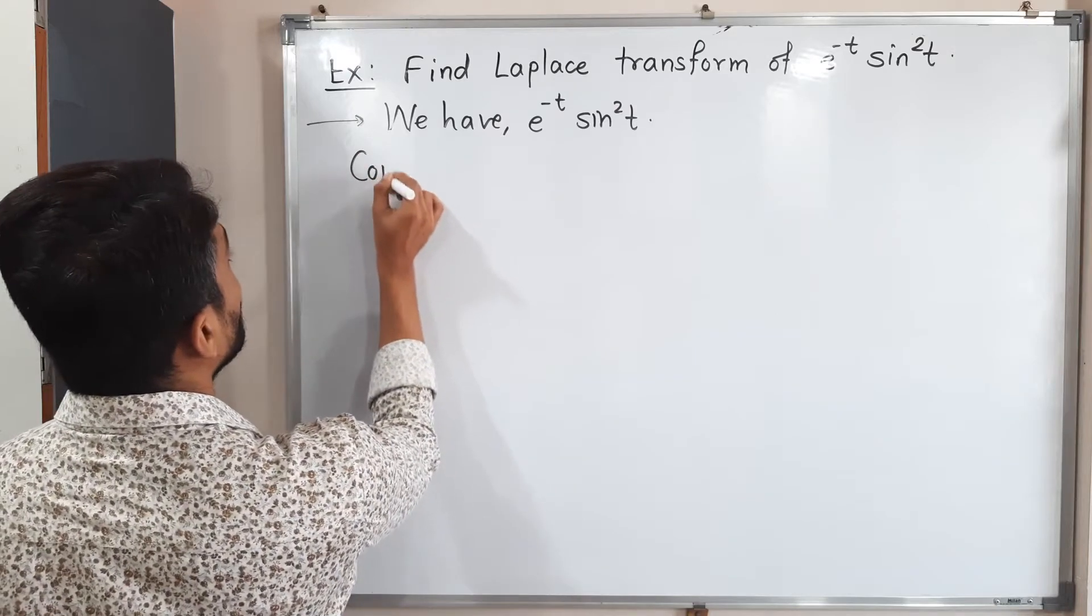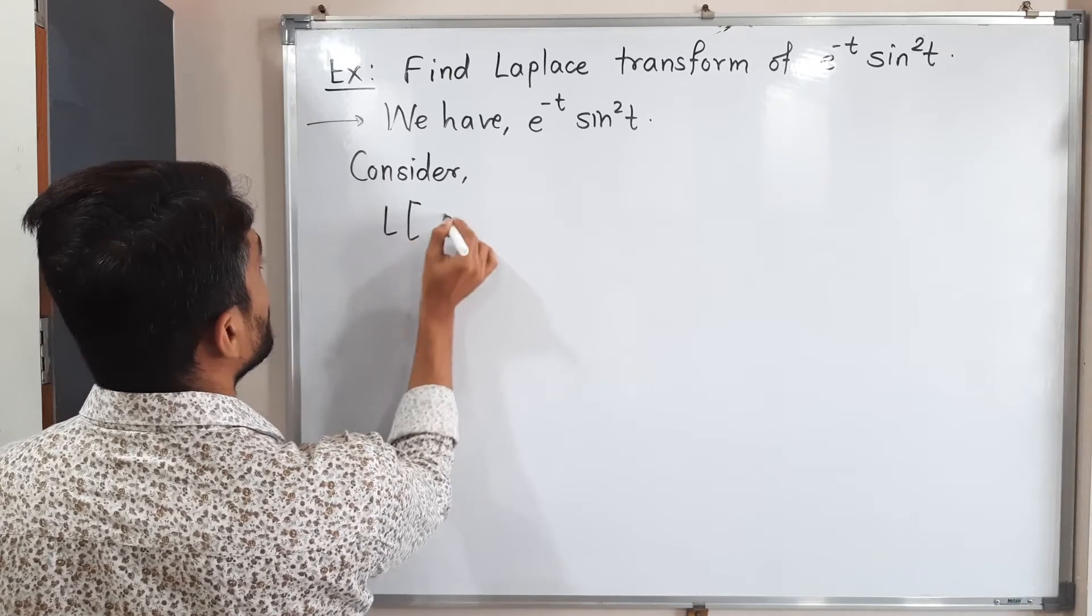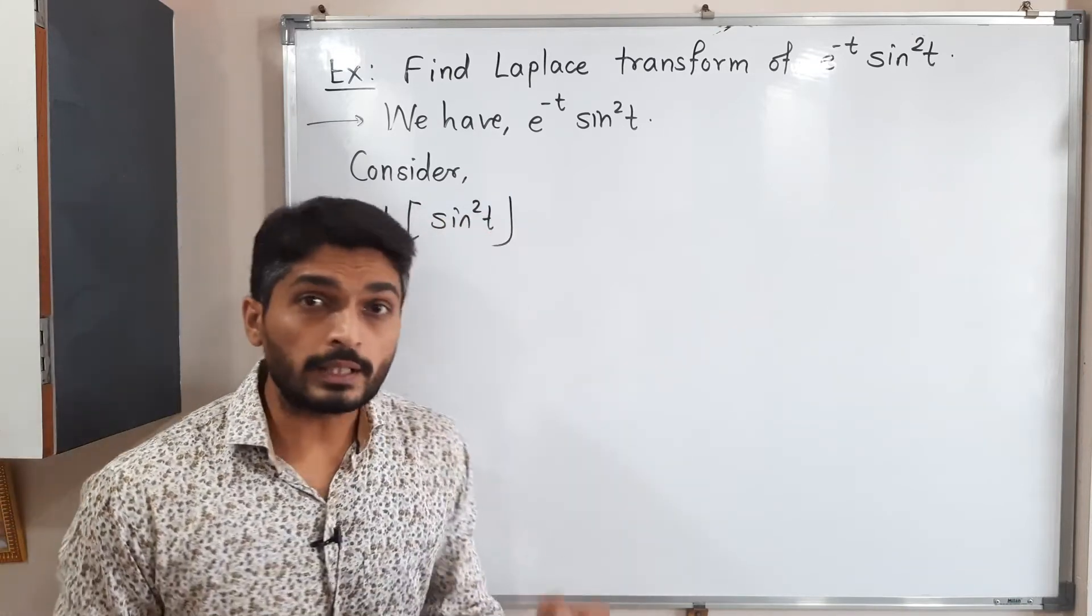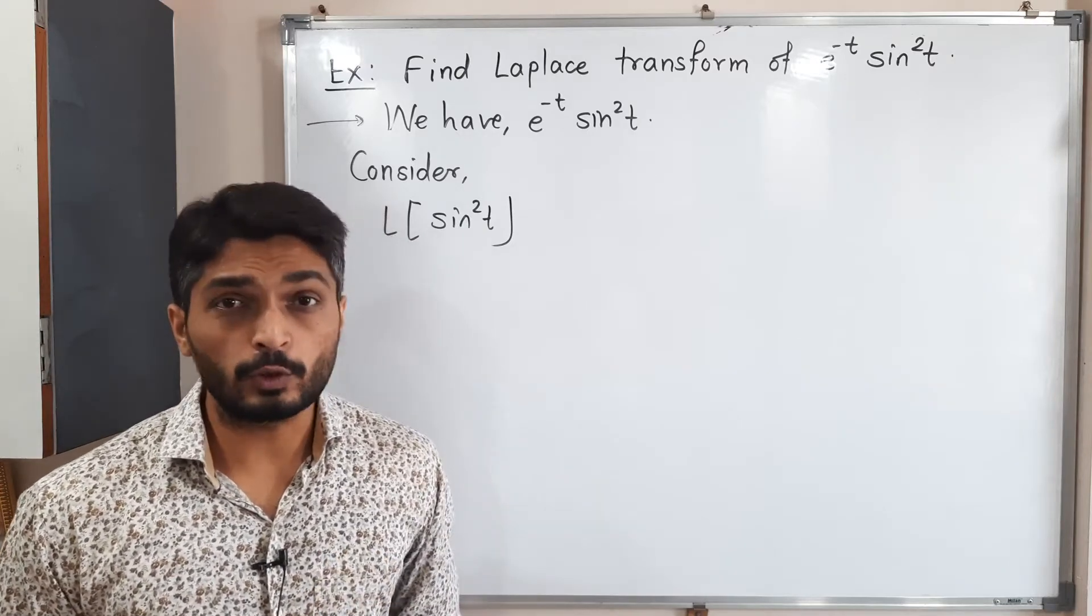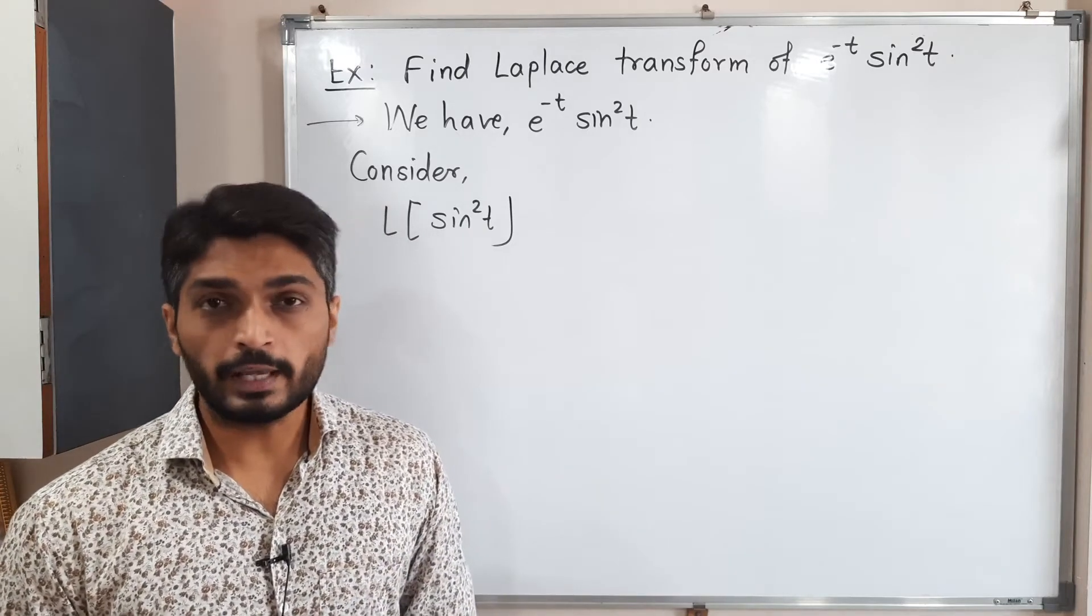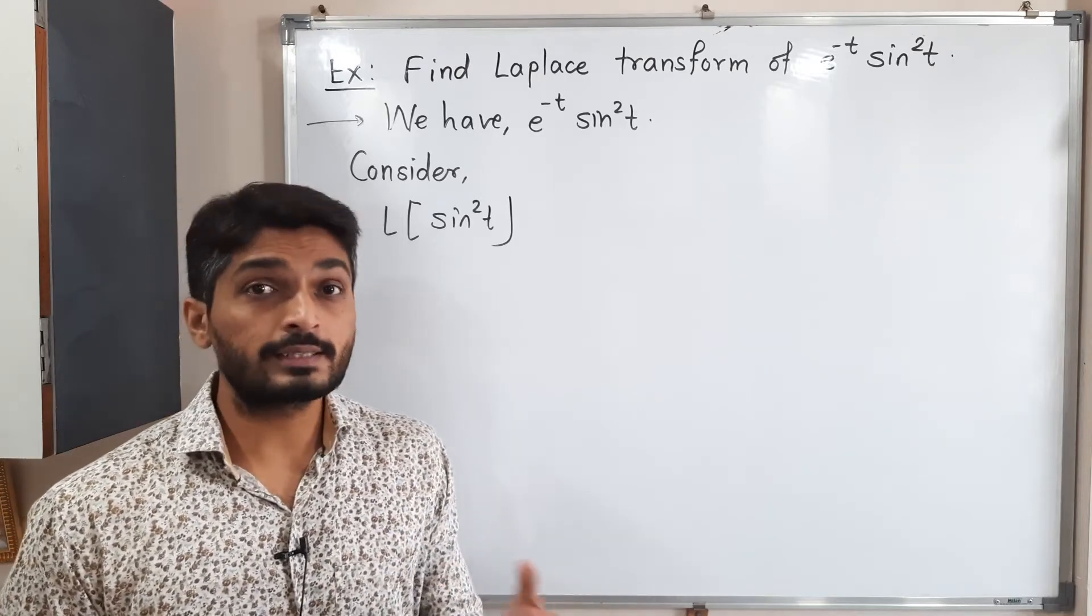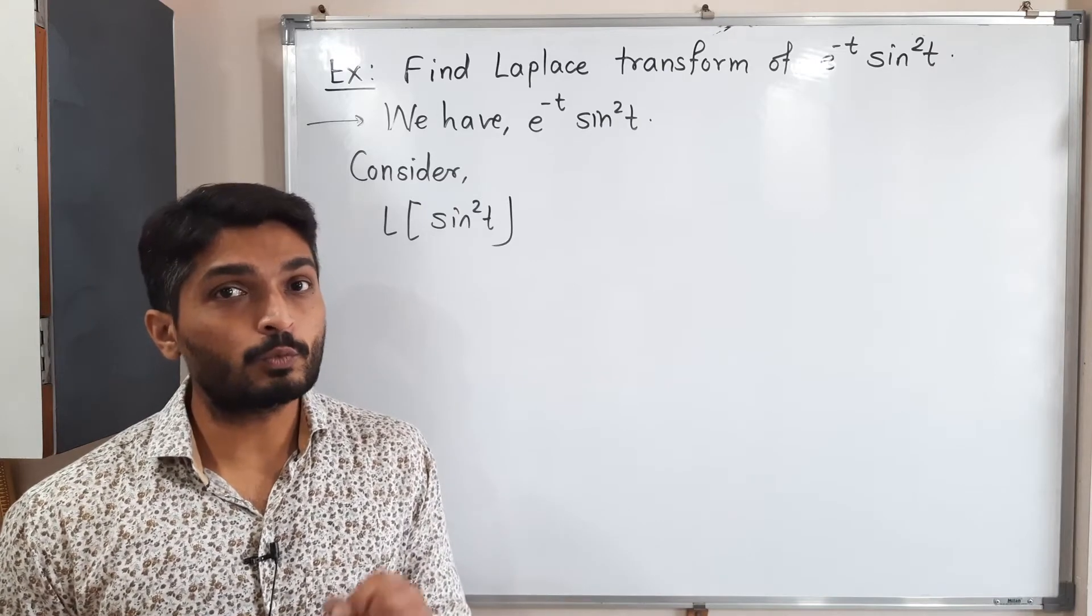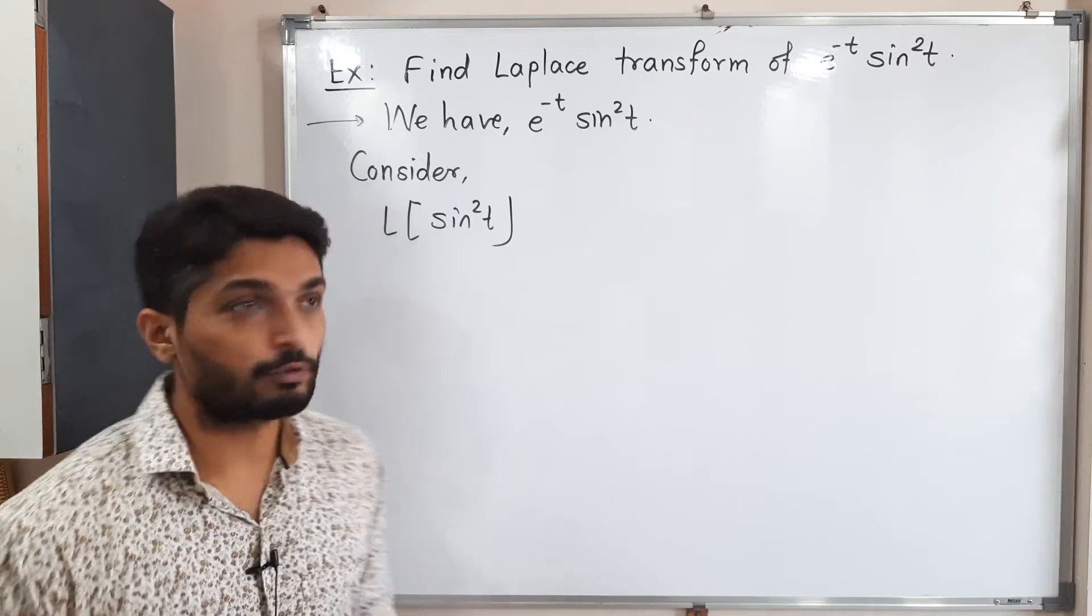Consider Laplace of sine square t. This thing we have to find. But the problem is that when square is there we don't have any direct formula. So here we have to use the knowledge of trigonometry. Can you tell me how to express sine square as a linear combination? The formula is sine square equals 1 minus cos 2 theta divided by 2. Let us use that formula here.